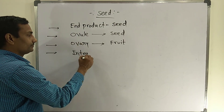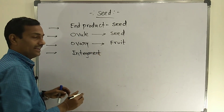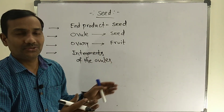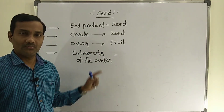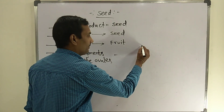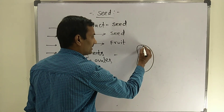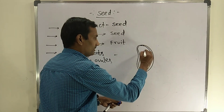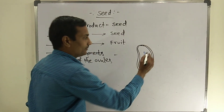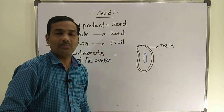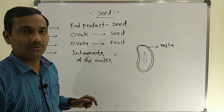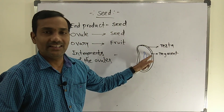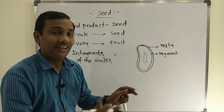The integuments of the ovule are modified into the outer and inner layers of the seed. The outer integument converts into the outer layer of the seed called the testa, and the inner integument converts into the inner layer of the seed called the tegmen. So in the seed you can easily observe two layers.